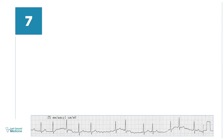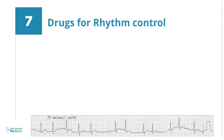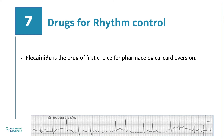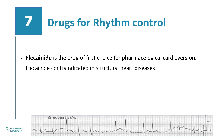Number 7. If rhythm control is considered, flecainide is the drug of first choice for pharmacological cardioversion. But this drug is contraindicated in patients with structural heart diseases, where amiodarone can be used instead.